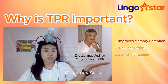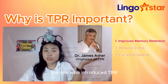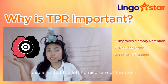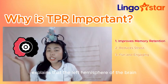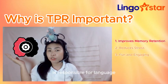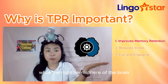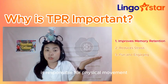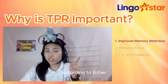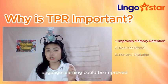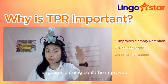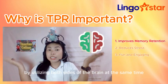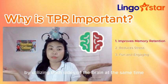Dr. James Asher, the one who introduced TPR, explains that the left hemisphere of the brain is responsible for language while the right hemisphere of the brain is responsible for physical movement. According to Asher, language learning could be improved by utilizing both sides of the brain at the same time.